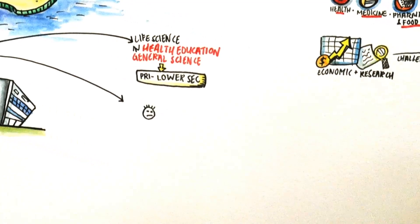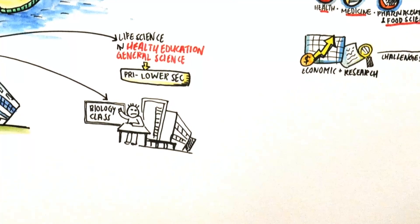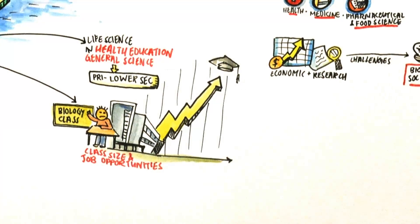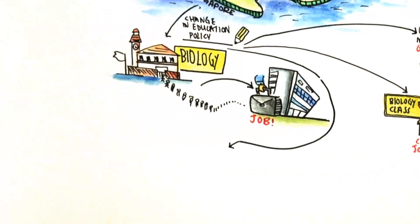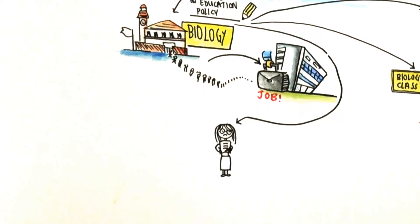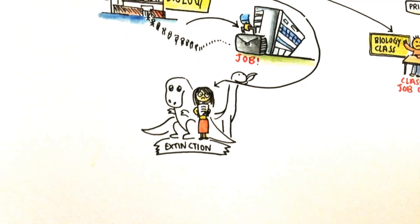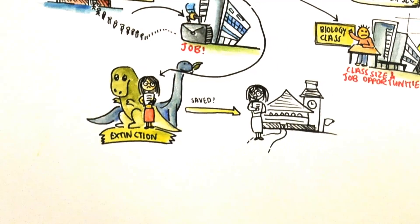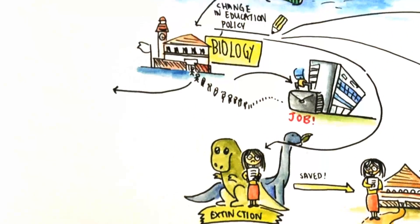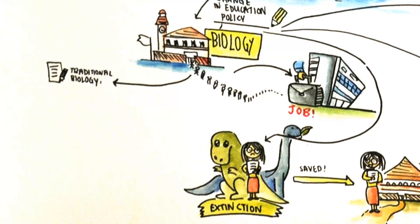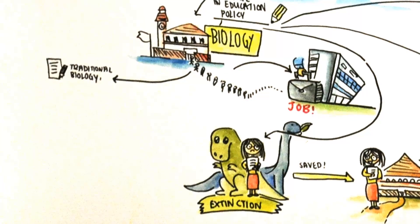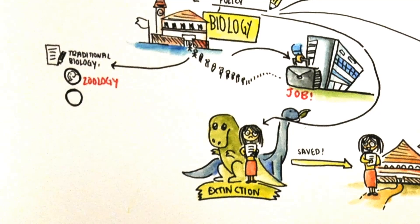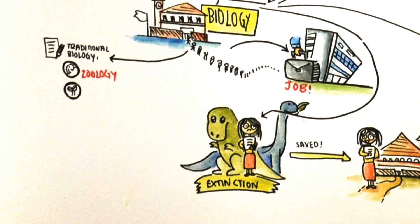Both the dwindling biology class size and job opportunities for biology graduates increased by multiple folds. Biology teachers, who once faced extinction like the dinosaurs, were saved from the brink as schools needed more of them. The traditional biology that focuses on the study of specific types of life — for example zoology, the study of animals, and botany, the study of plants — gave way to new topics.